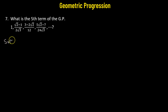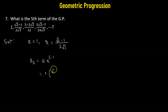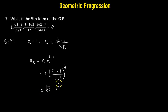Problem number seven: we want to obtain the fifth term of the geometric progression. The first term is 1. The common ratio is the second term divided by the first term, which is square root of 2 minus 1 divided by 2 times square root of 3. The fifth term a_5 equals 1 multiplied by square root of 2 minus 1 over 2 times square root of 3, raised to the power of 4, which gives square root of 2 minus 1 raised to the power of 4 in the numerator.